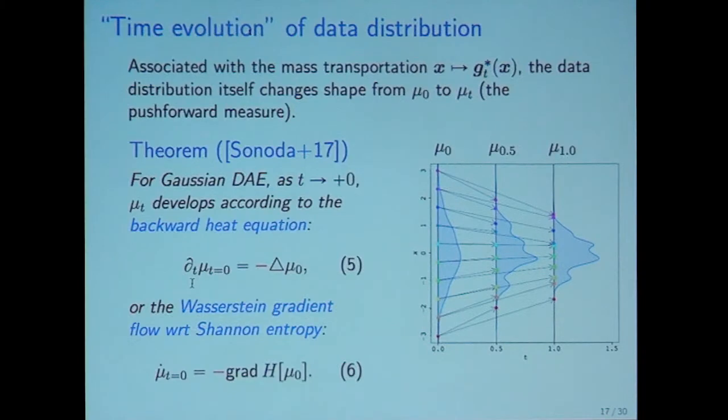So far, we talked about point transportation. And next, we talk about data distribution. In association with mass transportation, the data distribution itself changes shape from mu zero, data distribution mu zero to mu T. The deformed shape is dependent on the noise level T as in the figure.